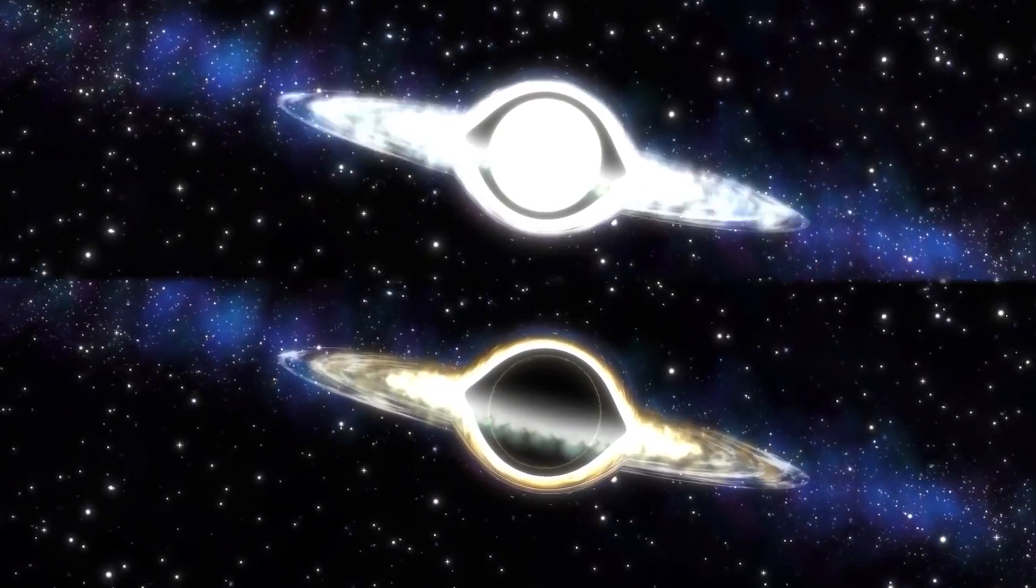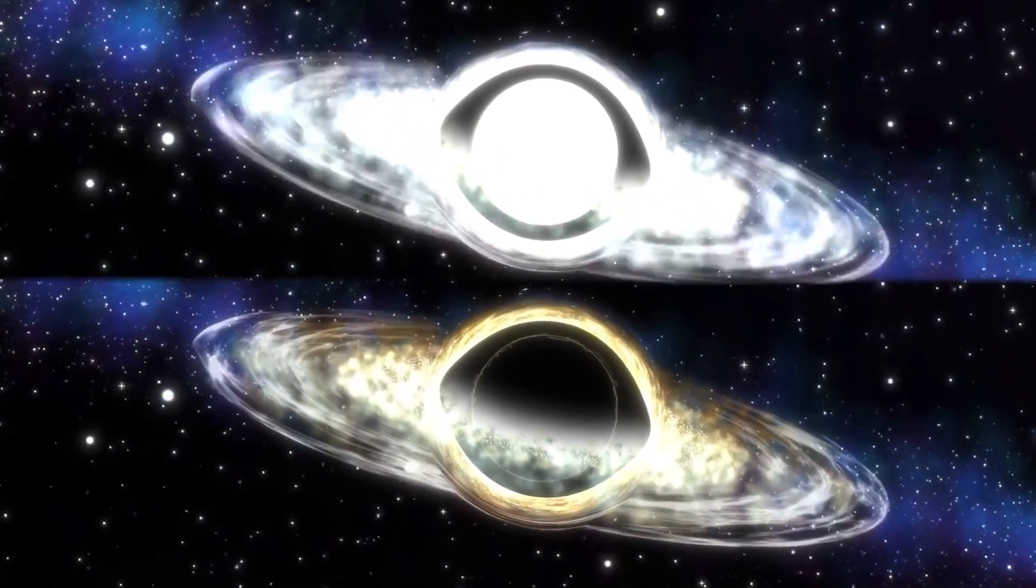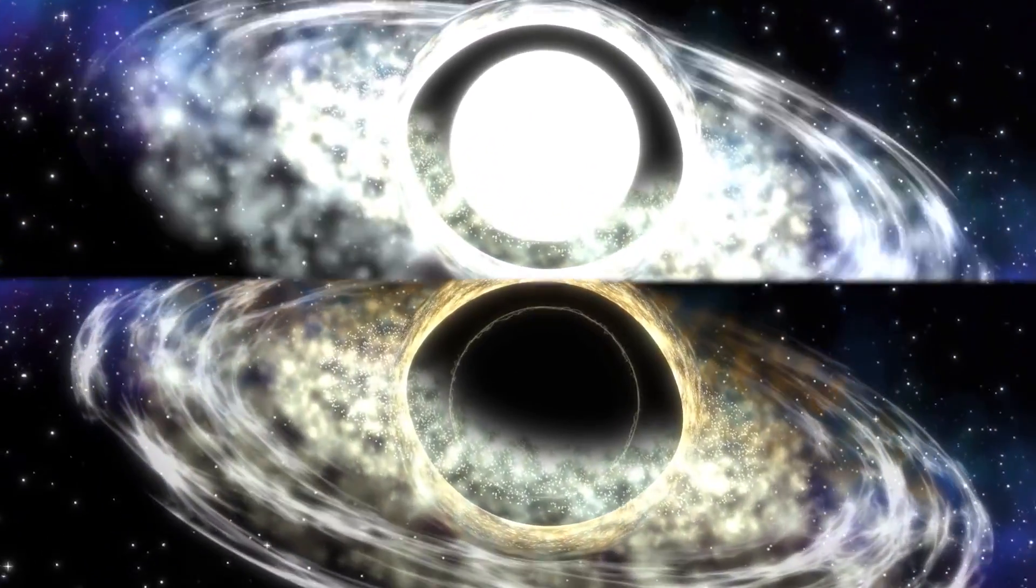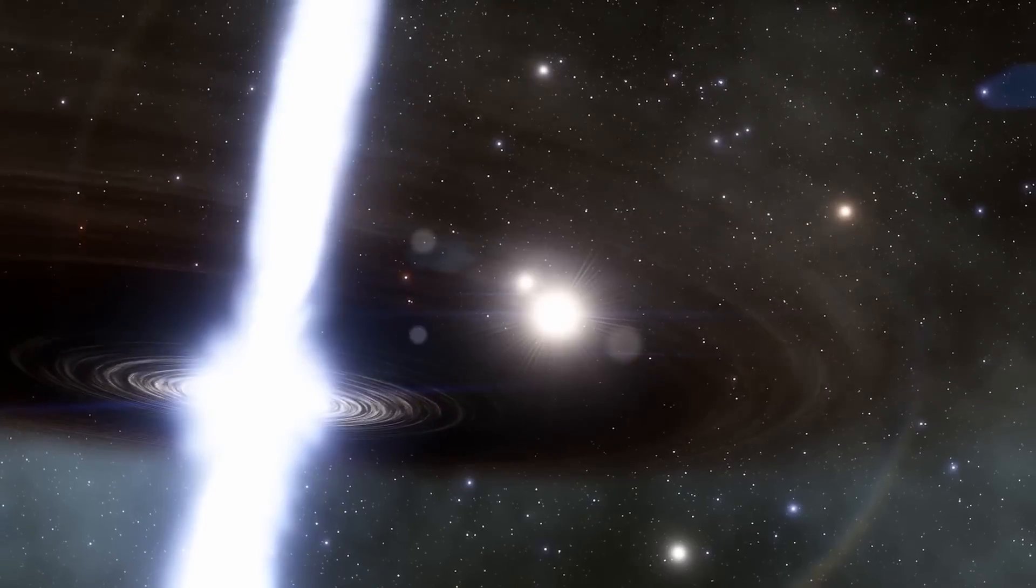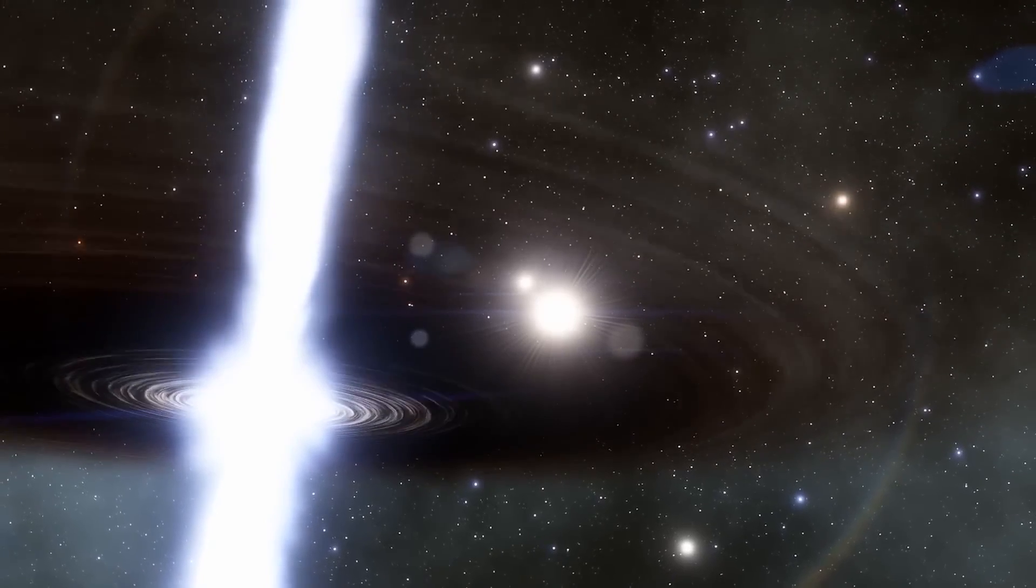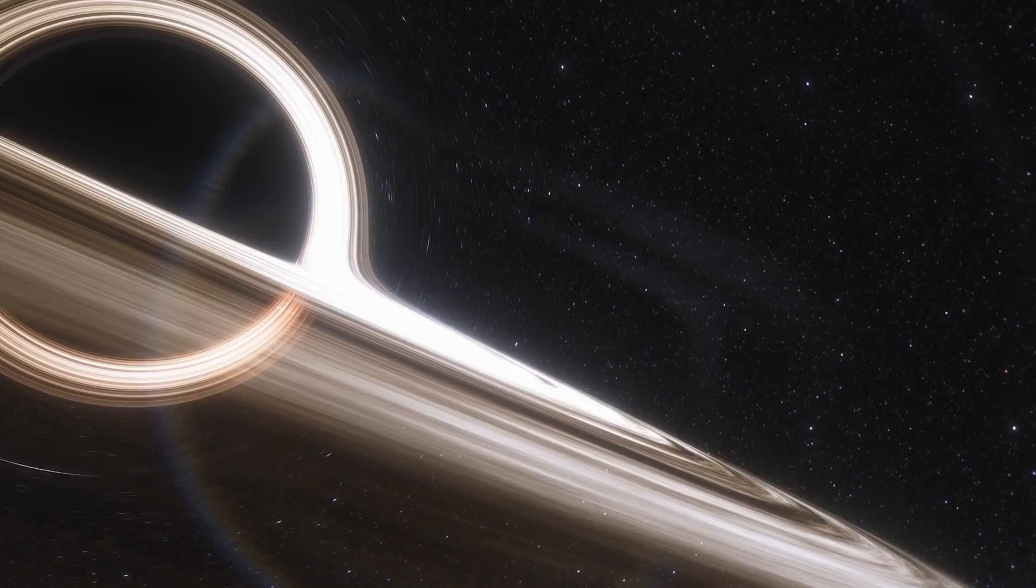From afar, white holes might appear similar to black holes, possessing mass and even rotating. They can have a ring of dust and gas around them, like black holes. However, they display a unique feature: an occasional burst unlike black holes.